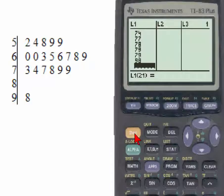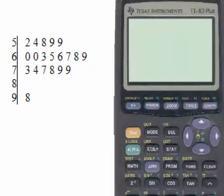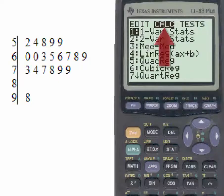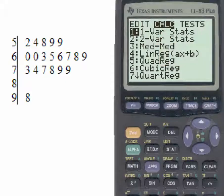Now we'll go to the home screen by hitting the yellow second and then quit above mode, and here we are on the home screen. We'll look at the values for the mean, the median, the standard deviation by going to the stat key and then to the calculate menu and selecting number one by either hitting number one or the enter key.